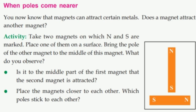Take two magnets on which N and S are marked. Place one of them on a surface. Bring the part of the other magnet to the middle of this magnet. Take a look at the figure. What do you observe? Is it the middle part of the first magnet that the second magnet is attracted to?